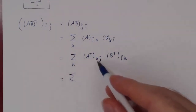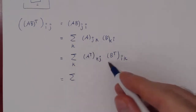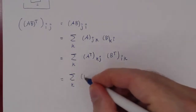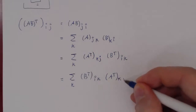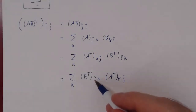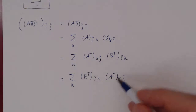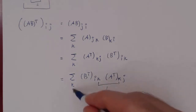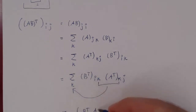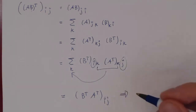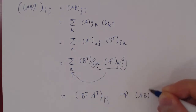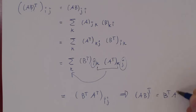Now we're summing over k. If you swap the order of these two terms — they're real numbers — you get the summation over k of B transposed at (i, k) times A transposed at (k, j). This is exactly taking the i-th row of B transposed and the j-th column of A transposed, multiplying corresponding entries, and adding them up. This is exactly the entry of B transposed A transposed in the i-th row, j-th column. So the entries of AB transposed are the same as B transposed A transposed, therefore they're equal. This completes the proof.